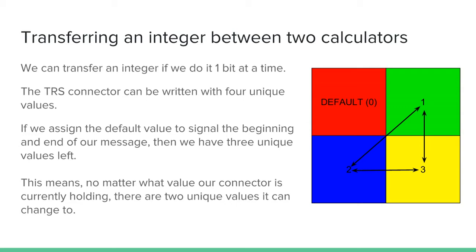The TRS connector can be written with four unique values. If we assign the default value to signal the beginning and end of our message, then we have three unique values left. This means no matter what value our connector is currently holding, there are two unique values it can change to.